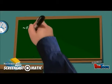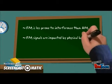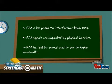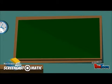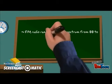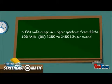Frequency modulation is less prone to interference when compared with AM. However, frequency modulation signals are impaired by physical barriers, and frequency modulation has better sound quality due to the higher bandwidth. The frequency range for FM radio is exactly 88 to 108 MHz, which is in a higher spectrum compared with AM.